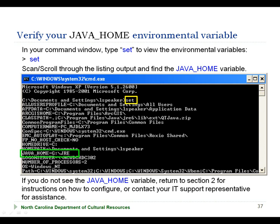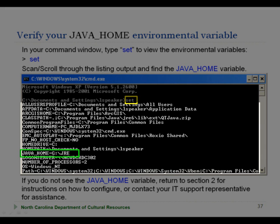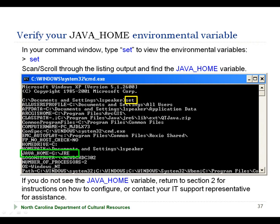Before running the BagIt program, you'll want to make sure that the Java runtime environmental variable is configured. You can do this by running the set command, which displays an alphabetized list of environmental variables. You can use the scroll bar on the right to scroll up and down the list and search for the Java home environment variable. If you do not see the Java home environmental variable in your listing, you can return to Section 2 of the tutorial that describes the BagIt installation, or contact your IT support representative for assistance.